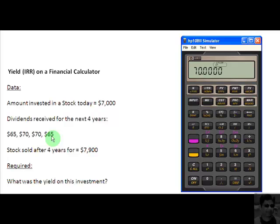Then I have this $65 which I'm receiving as dividends at the end of the fourth year. But also keep in mind that at the end of the fourth year you are selling your stock for $7,900, so the total amount that you receive at the end of four years is $7,900 plus $65, which is $7,965. So I'm going to punch in $7,965 and store it into my cash flow button as my last cash flow.